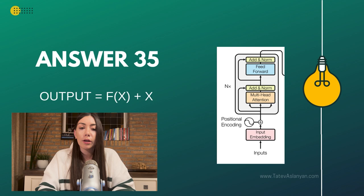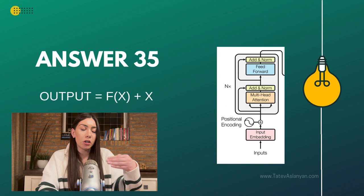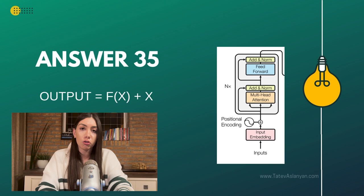The reason why it is called a shortcut or skip connection is because the gradients are simply skipping through this transformation — through the computational graph of being transformed via multiplication with the weights, adding bias factors, and then using the activation function. Instead, the gradient also has a direct shortcut contributing to the final outcome.